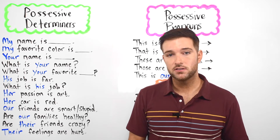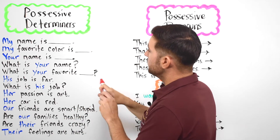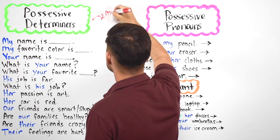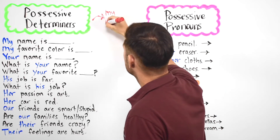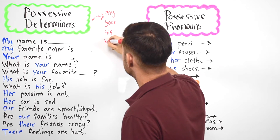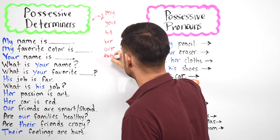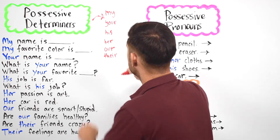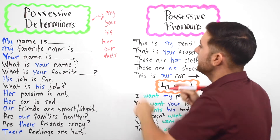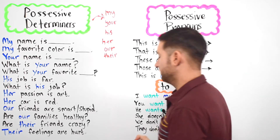First, let's take a look at the possessive determiners. The possessive determiners are: my, your, his, her, our, and their. These are possessive determiners.